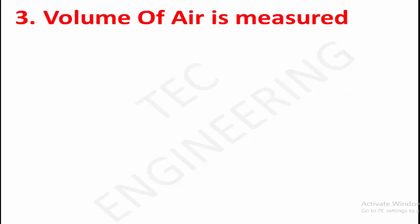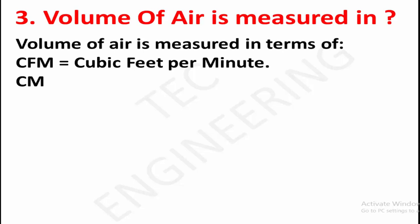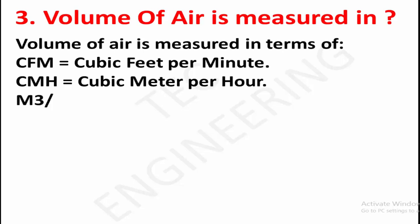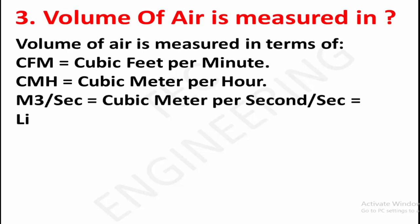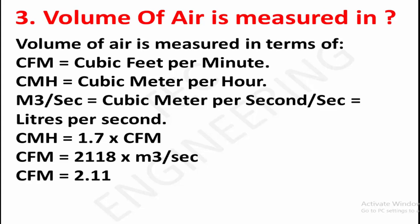Volume of air is measured in terms of: CFM — cubic feet per minute; CMH — cubic meters per hour; M3/sec — cubic meters per second; L/sec — liters per second. Conversions: CMH equals 1.7 × CFM; CFM equals 2,118 × M3/sec; CFM equals 2,119 / L/sec.